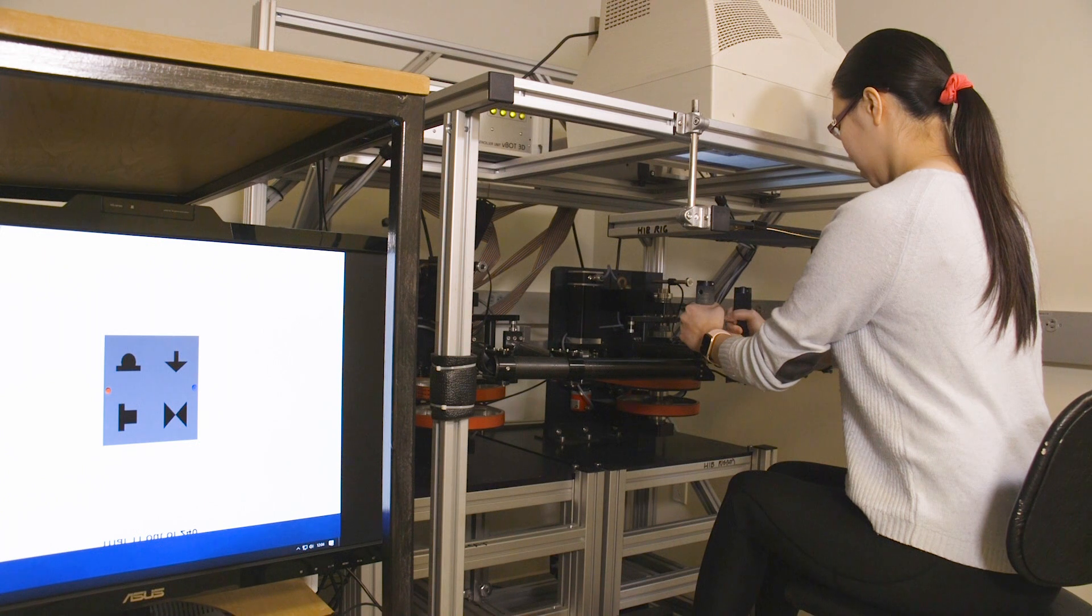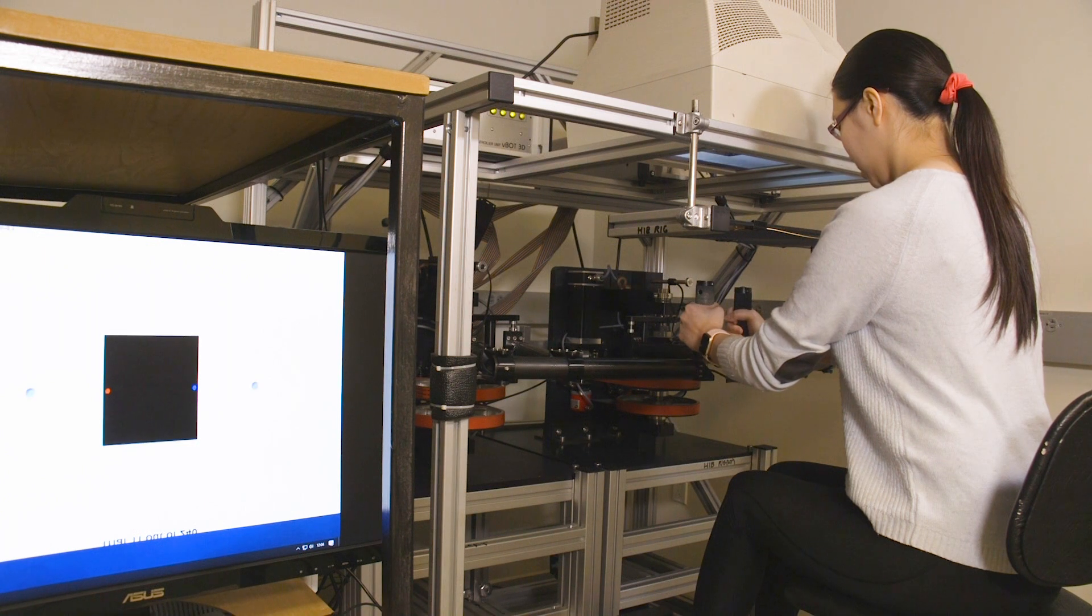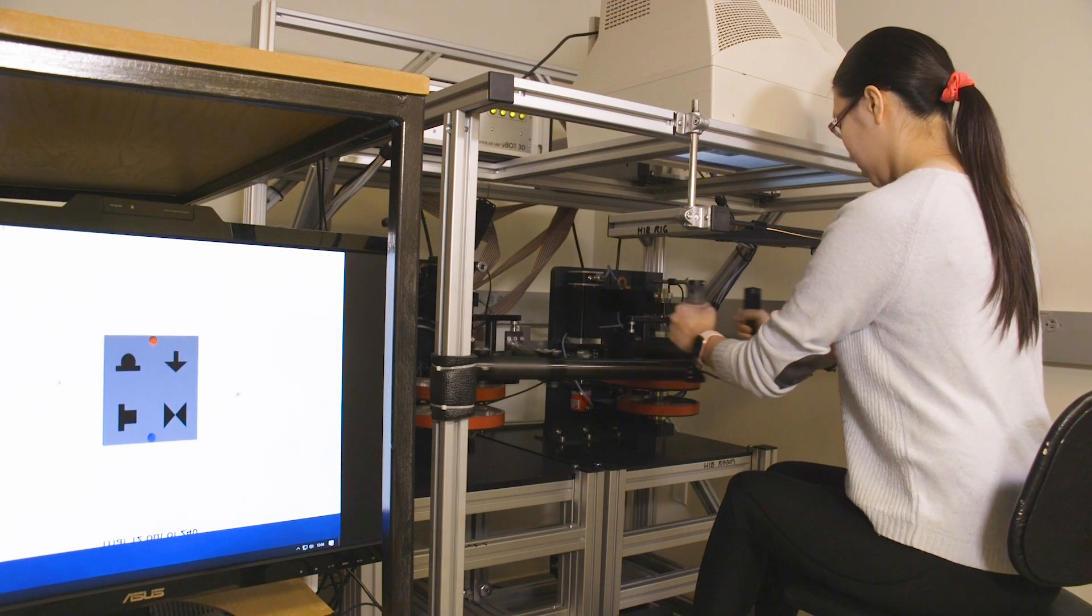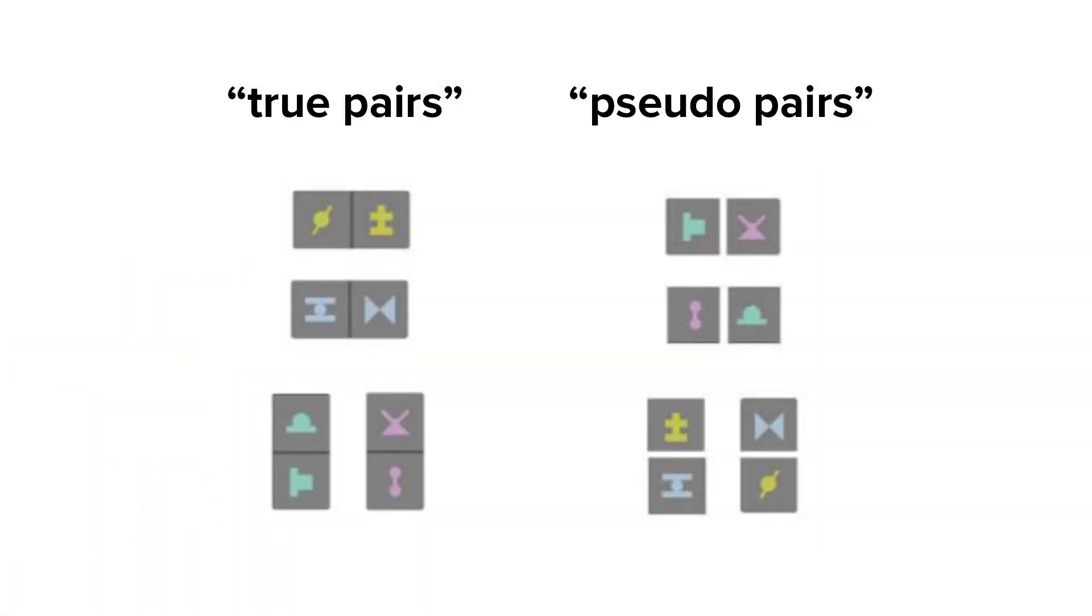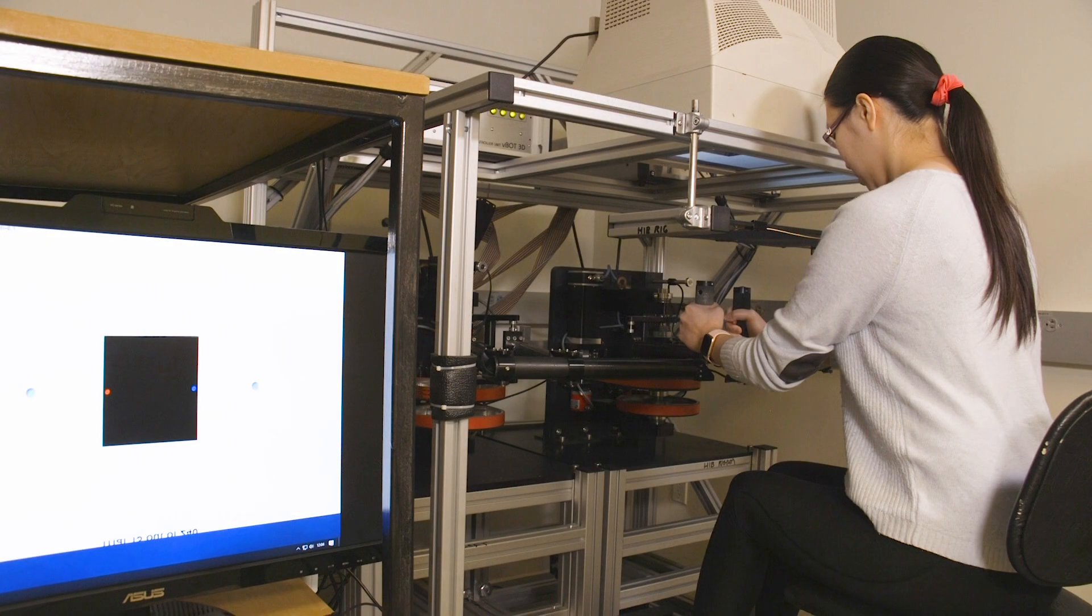And each trial has a different set of force symbols, and what we don't tell the subject is actually some symbols, pairs of symbols are true objects, they're hard to break apart, and some symbols are part of what we call pseudo-objects, so they're easy to break apart.